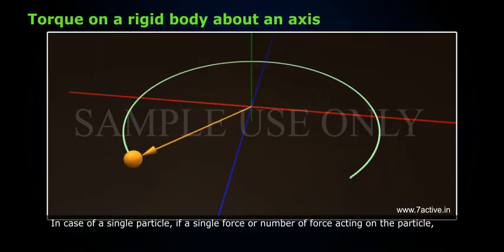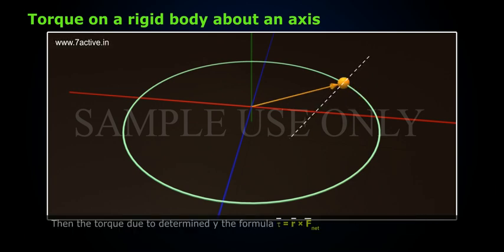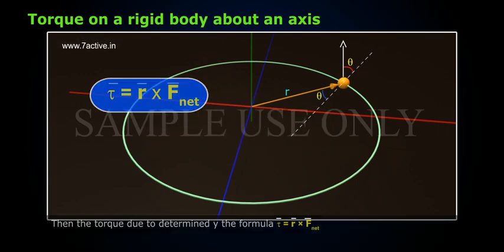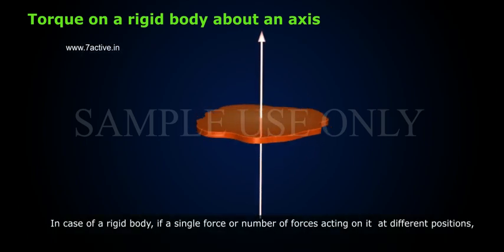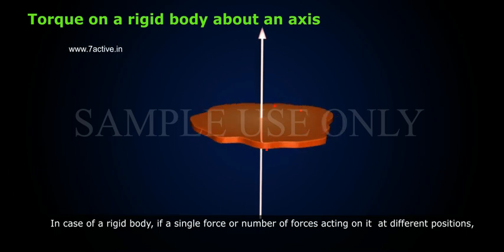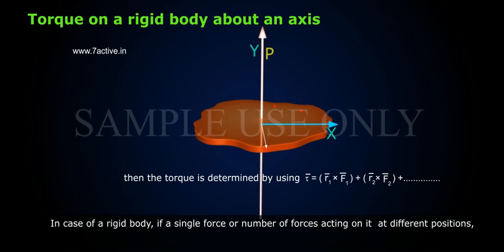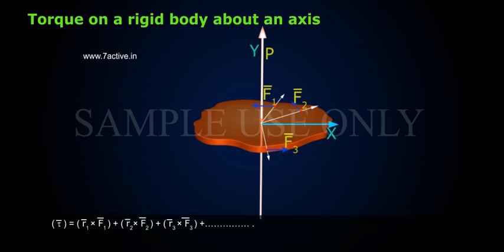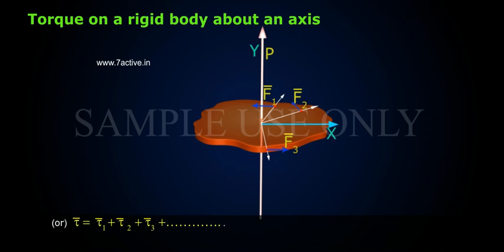Torque on a rigid body about an axis: In the case of a single particle, if a single force or a number of forces act on the particle, the torque is determined by tau equals R cross F_net. In the case of a rigid body where forces act at different positions, the torque is determined by: tau equals R1 cross F1 plus R2 cross F2 plus R3 cross F3 plus so on. Therefore, tau equals tau1 plus tau2 plus tau3 plus so on.